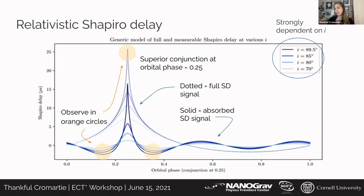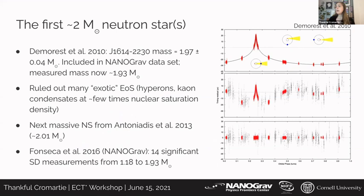We define Shapiro conjunction happening at orbital phase 0.25, where the big spike is. The dotted lines represent the full Shapiro delay signal, but the solid line is what we're actually able to observe — the absorbed Shapiro delay signal, which is what we get when we don't have the mass and inclination angles a priori. The best way to measure Shapiro delay is by observing during the orange-circled orbital phases, covering the full extent of the signal. Unfortunately, that's a very specific observing request, so getting this observing time is a little bit tough.